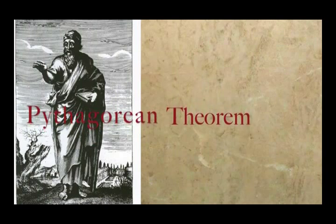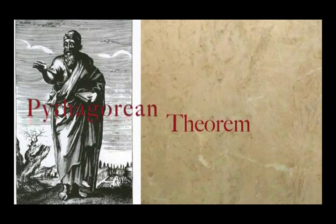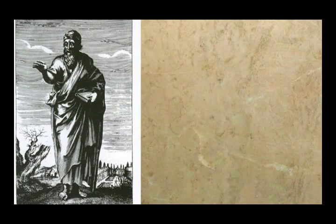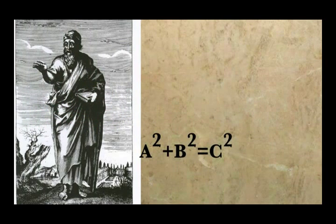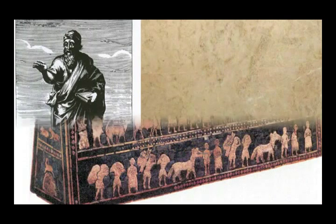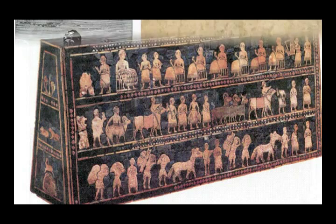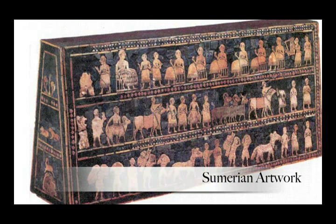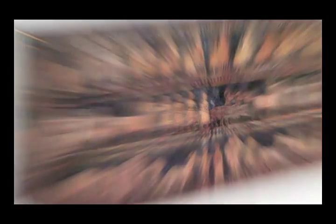Pythagoras is most famous for proving the Pythagorean theorem, also known as a squared plus b squared equals c squared. Although it should be noted that this equation was being used as early as the year 2000 BC by the Sumerians, Pythagoras was able to prove that it would always be true.